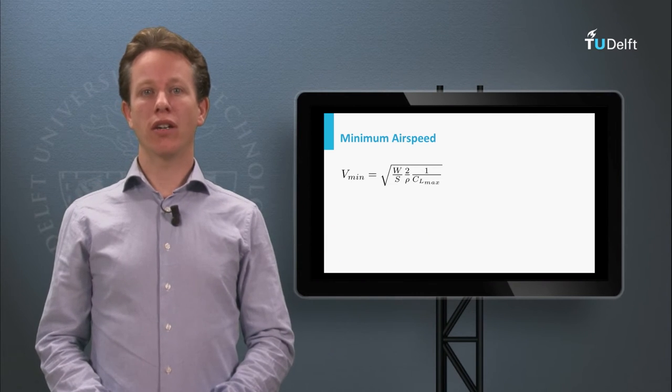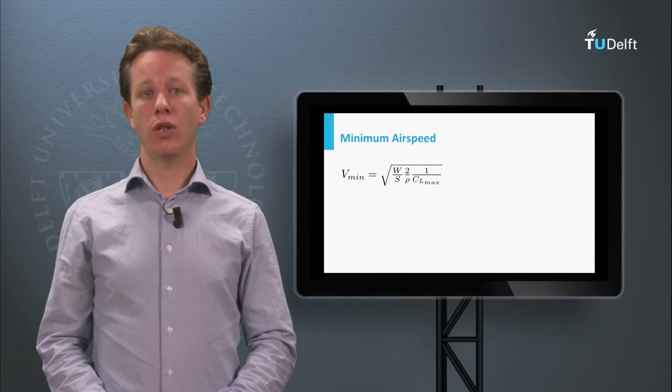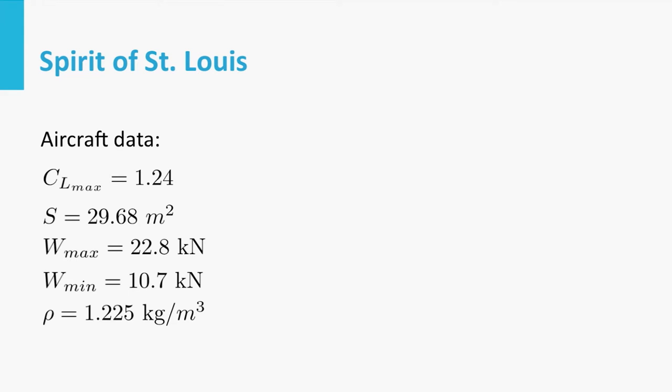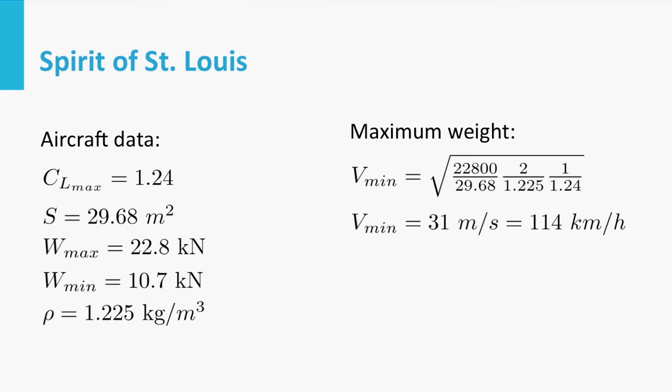Now let's apply it to an actual aircraft, the Spirit of St. Louis, which was introduced last time. The Spirit of St. Louis had a maximum lift coefficient of approximately 1.24 and a maximum mass of 2237 kilograms, corresponding to about 22.8 kilonewtons. It has a wing surface area of 29.6 square meters, and assuming flight at sea level where air density equals 1.225 kilograms per cubic meter, filling in the equation gives a minimum airspeed of 32 meters per second or 114 kilometers per hour.